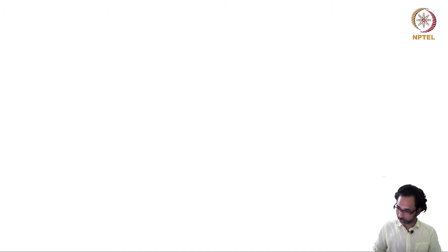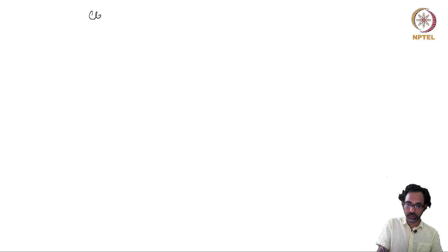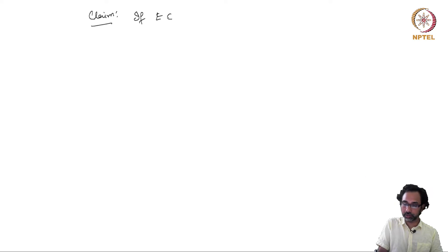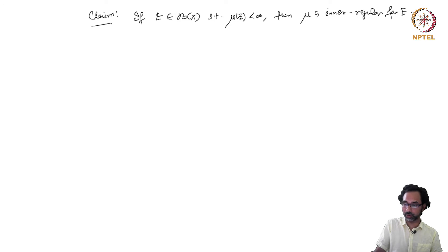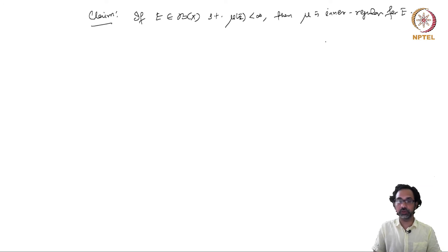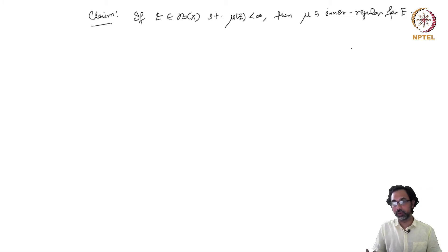Now we need another result. I claim that if E is a Borel set such that mu(E) is finite, then mu is inner regular for E. Note that the Radon measure assumption is only that mu is inner regular for open sets, but now I claim that for any Borel set with finite measure, mu is inner regular.